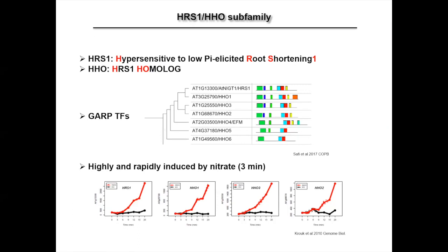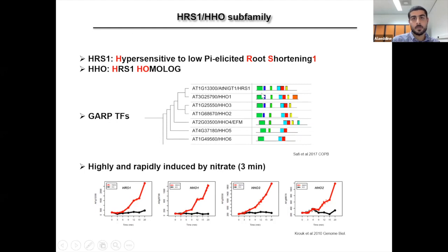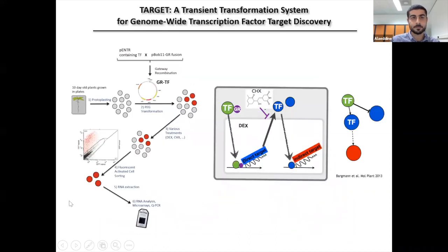This is composed of the first one to be identified and six other homologs. If you look closer, you can see that the first four members share the same domains. And interestingly, they are all highly and rapidly induced by nitrate, sometimes within three minutes of nitrate applications. So the high responsiveness of HHO to nitrate prompted us to further study their role by identifying their target genes.